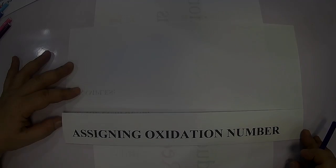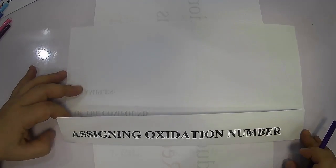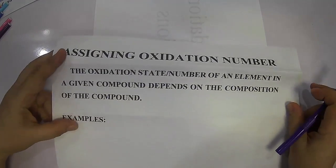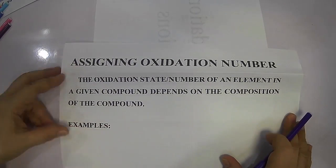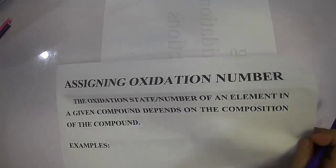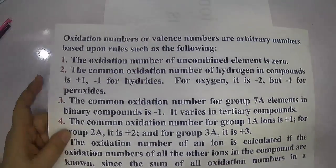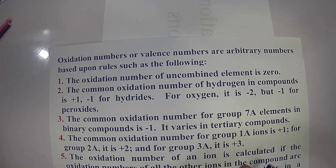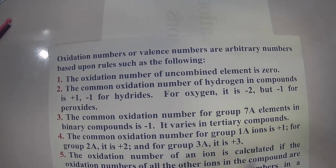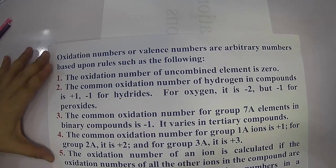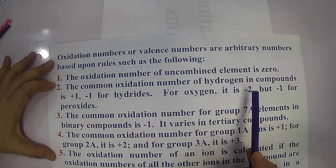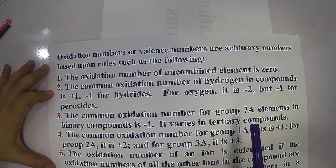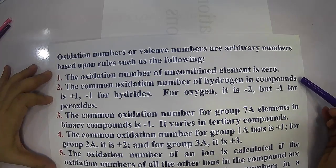Welcome to the topic: assigning oxidation numbers. The oxidation number of an element in a given compound depends on the composition of the compound. The oxidation number, or valence number, are arbitrary numbers based upon the following rules. The oxidation number of an uncombined element is zero. The common oxidation number for hydrogen in compounds is positive one.